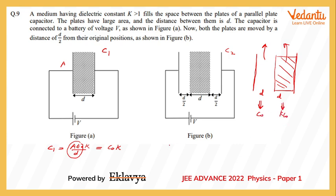C2 will be written as C naught into K times C naught divided by C naught plus K C naught. This turns out to be K times C naught upon K plus 1, or we can write it as C1 by K plus 1. We have written capacitance initially and finally.